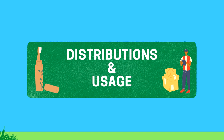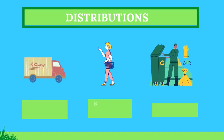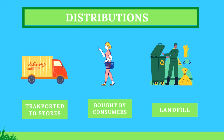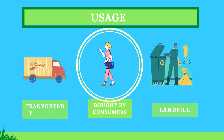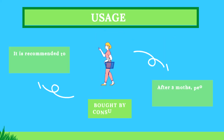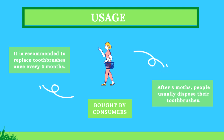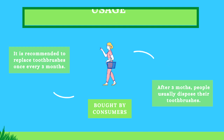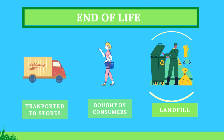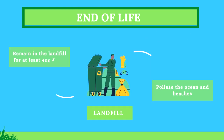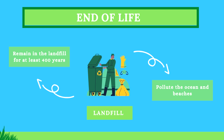Now we are at the distribution and usage phase. Packaged toothbrushes are transported to local stores, bought by consumers, and usually end up in landfills. It is recommended to replace your toothbrush once every three months, and when people get a new one, they typically throw the old one away. That discarded toothbrush ends up in a landfill — where it will remain for at least 400 years, unable to decompose, and with a tendency to pollute oceans and beaches.